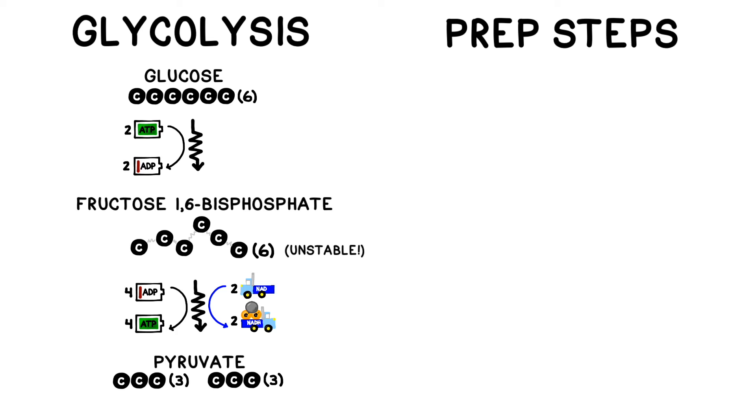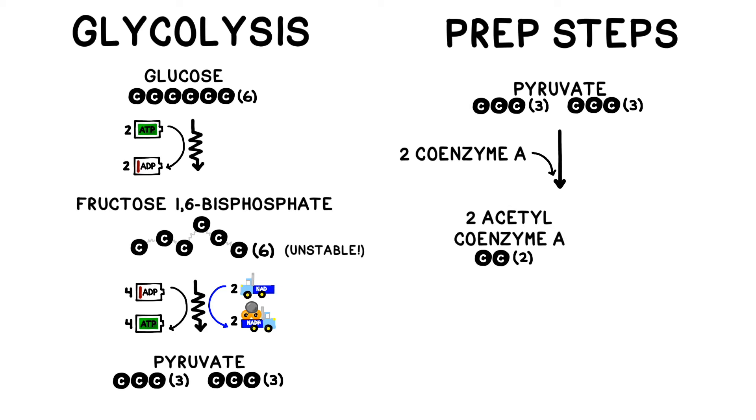These are technically part of glycolysis, but my students found it far easier to understand how glycolysis and the Krebs cycle are connected when we outline this particular set of reactions independently. The prep steps occur in the cytoplasm, just like glycolysis. We need to slice and dice the products of glycolysis a little bit in order to use them in the Krebs cycle. During the prep steps, we're going to modify our three-carbon molecule of pyruvate using something called coenzyme A. Coenzymes store energy in their bonds and help enzymes work more effectively.